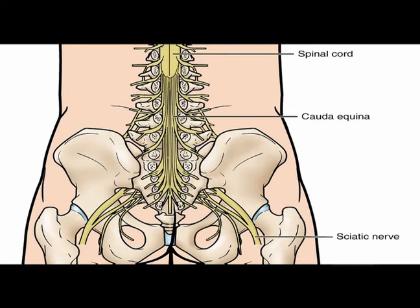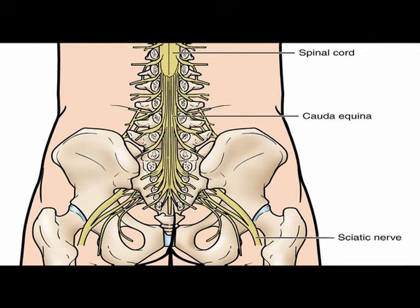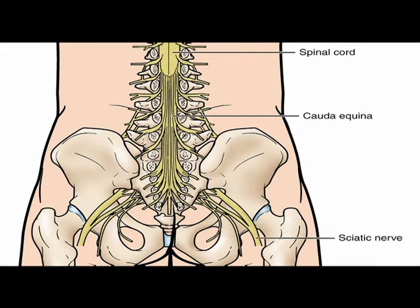The spinal cord ends between vertebrae L1 and L2. The conus medullaris is the tapered end of the spinal cord. The cauda equina, which is Latin for horse's tail, arises from the conus. It is a bundle of spinal nerves and spinal nerve roots, consisting of the second through fifth lumbar nerves, the first through fifth sacral nerves, and the coccygeal nerves. These nerves innervate the pelvic organs and the lower limbs.